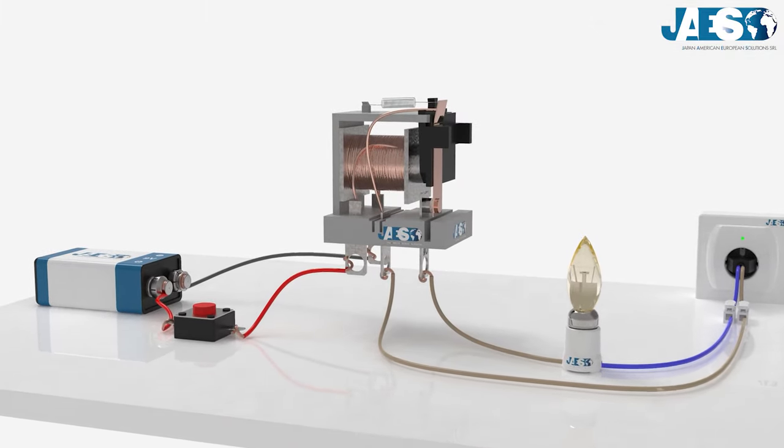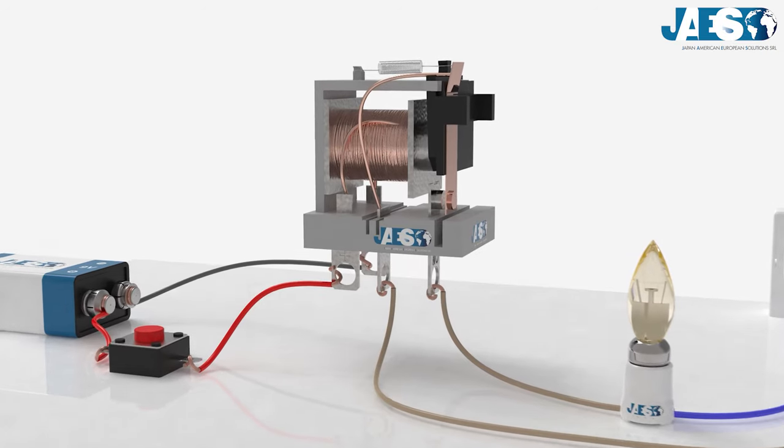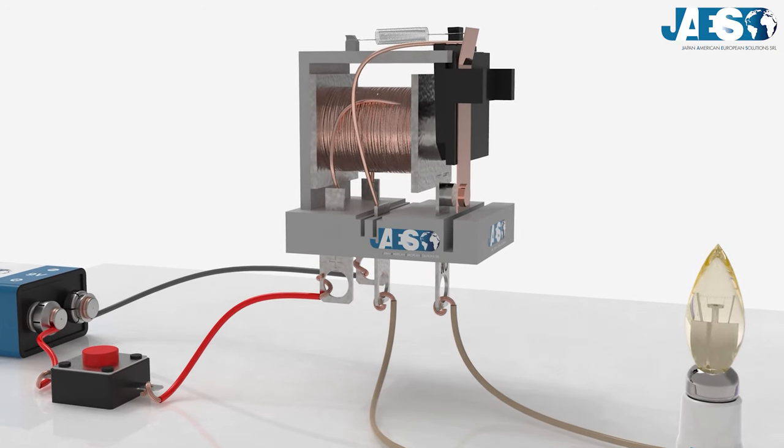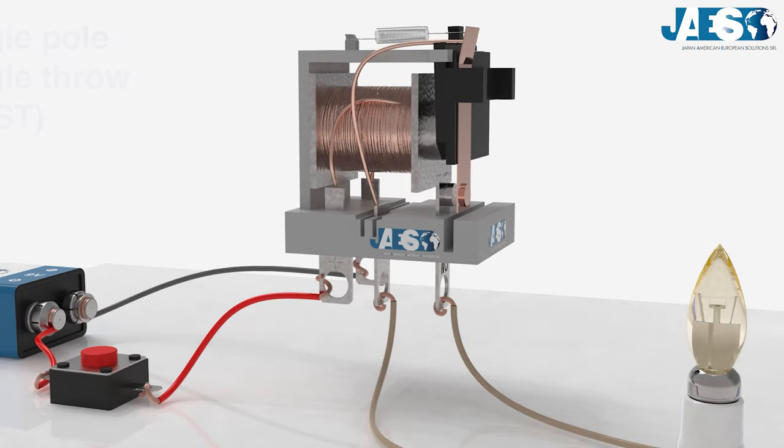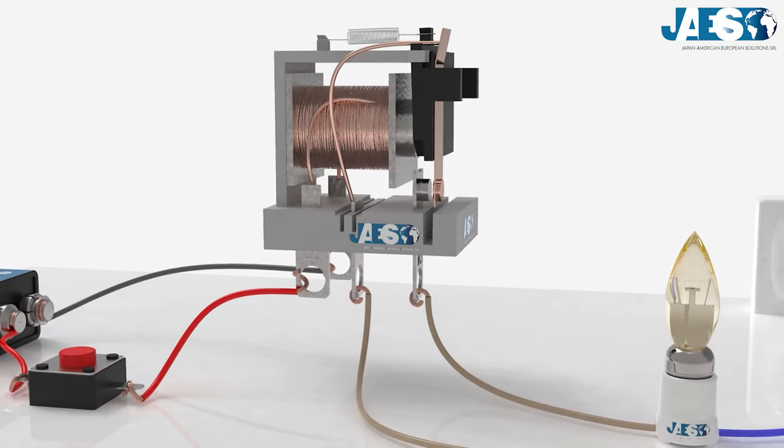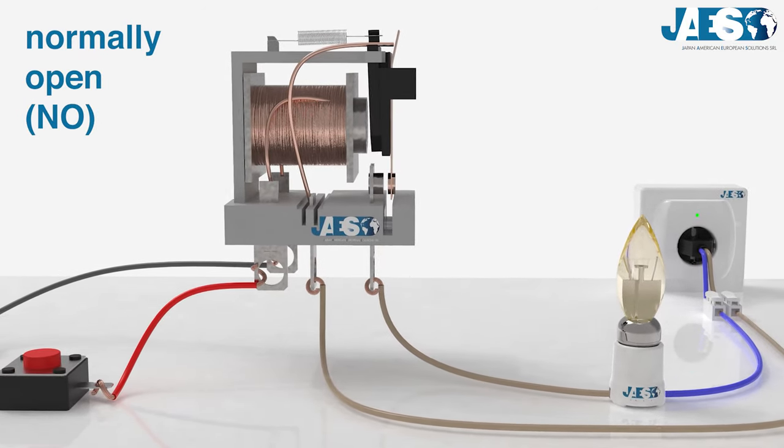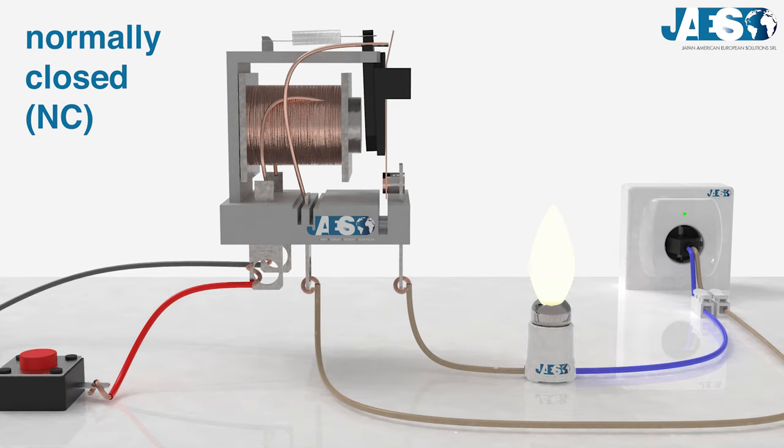Relays can have different types of contacts. Let's see them one by one. The Single-Pole Single-Throw is the one we've just seen. The relay behaves like a simple on-off switch. This type of relay can be made in the Normally Open or Normally Closed configuration.